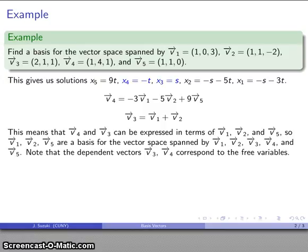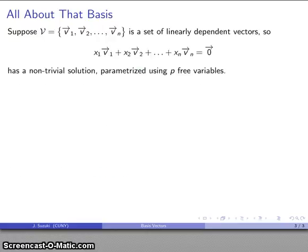Now, you might notice that the dependent vectors v3 and v4 are the ones that are directly expressible in terms of the free variables. Vector v3 corresponds to the variable x3, and that corresponds to one of my free variables. Vector v4 corresponds to minus t, and that's another one of our free variables. And, well, this is a coincidence. Or is it? Well, let's think about that a little bit more.